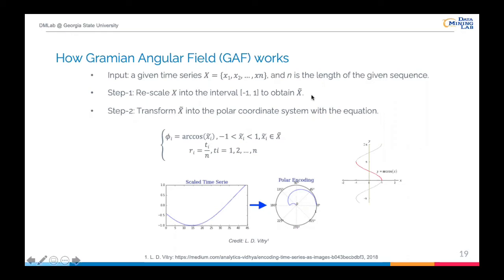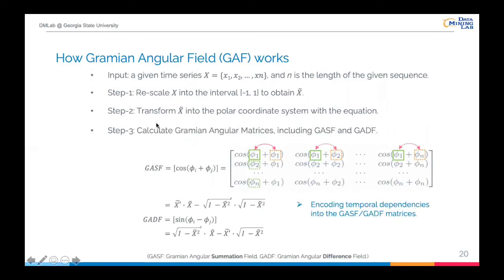The second step is to transform the rescaled time sequence into the polar coordinate system with the provided equations. Since x-tilde belongs to minus 1 to 1, phi_i will belong to 0 to 180 degrees. There are two primary advantages in this transformation. First, the entire encoding process is bijective as the arc-cosine function is monotonic. Second, the polar coordinate system preserves temporal dependency by using the radial coordinate R. However, in the GAF, it only uses angular coordinates to preserve temporal dependencies by constructing a matrix, and there are two forms: GASF and GADF.